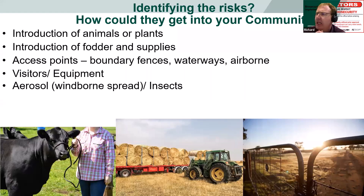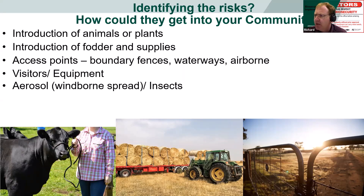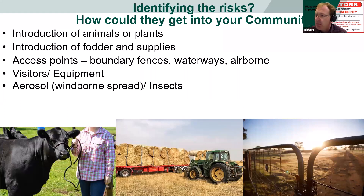The next step is identifying the risks — how do they get onto your farm and into the community? Often it's the introduction of animals or plants; that's often the biggest risk on farm as well as into Australia, introducing an animal that's naive to that area. The next level is introduction of fodder and supplies, particularly grains or hay from different areas, which also pose a disease risk, particularly weed seeds. Access points, boundary fences, and waterways are another key risk.